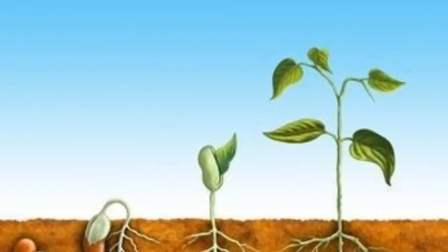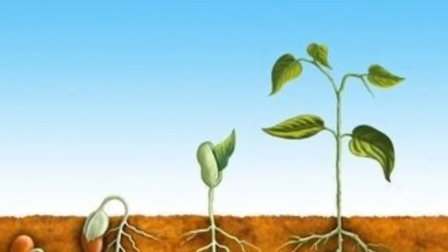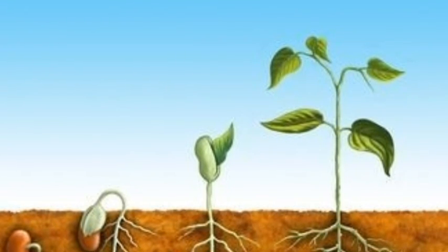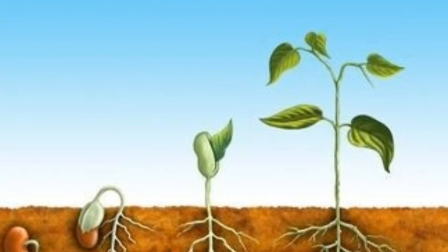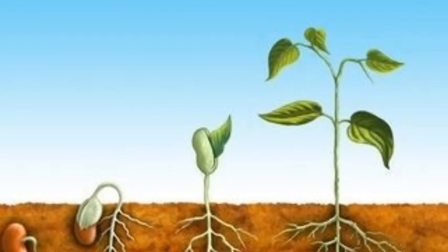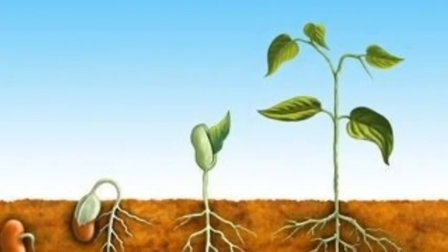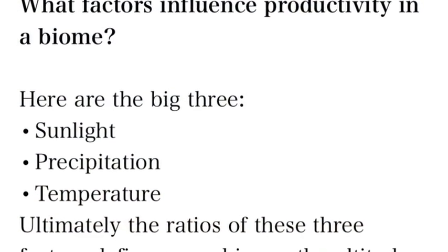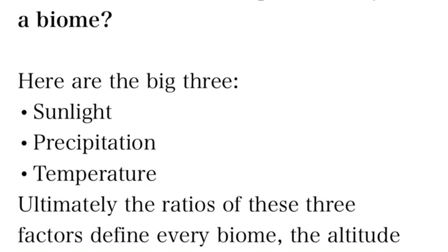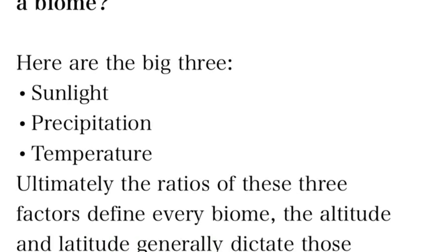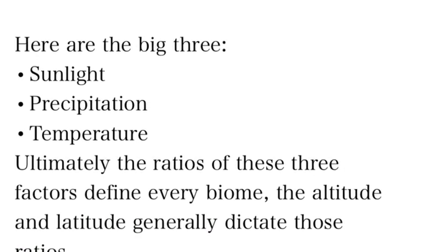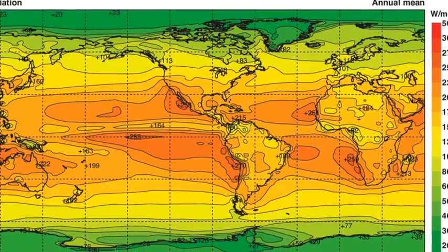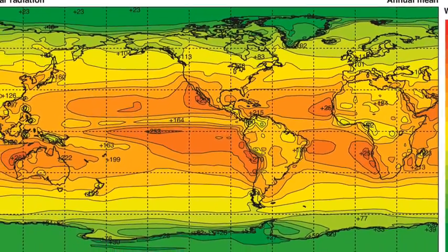I've told you that carbon dioxide and water make a plant — so why does soil even matter? Plants need nitrogen, phosphorus, and magnesium to put together the other molecules they need, and that comes from the soil. The three big things that define a biome are sunlight, precipitation, and temperature.